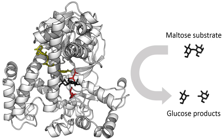The theoretical maximum for the specificity constant is called the diffusion limit and is about 10^8–10^9 M⁻¹s⁻¹. At this point, every collision of the enzyme with its substrate will result in catalysis, and the rate of product formation is not limited by the reaction rate but by the diffusion rate. Enzymes with this property are called catalytically perfect or kinetically perfect. Examples of such enzymes are triosephosphate isomerase, carbonic anhydrase, acetylcholinesterase, catalase, fumarase, beta-lactamase, and superoxide dismutase. The turnover of such enzymes can reach several million reactions per second.